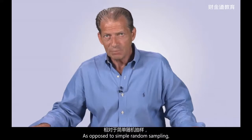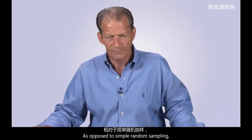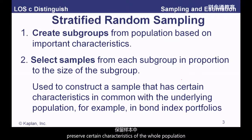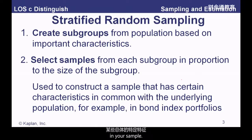As opposed to simple random sampling, we have stratified random sampling. The idea of stratified random sampling is to preserve certain characteristics of the whole population in your sample.